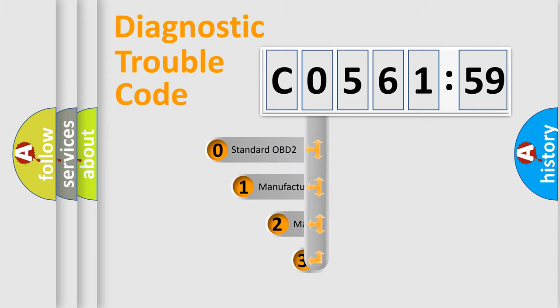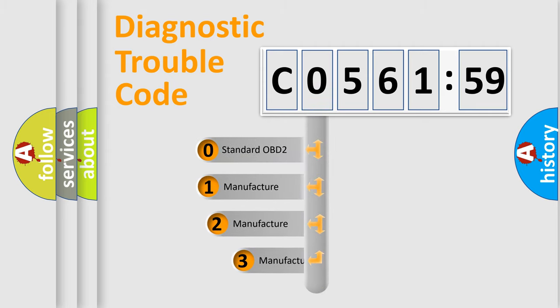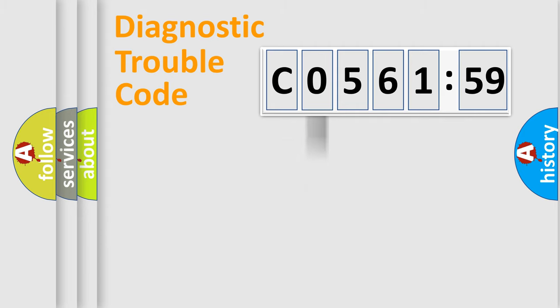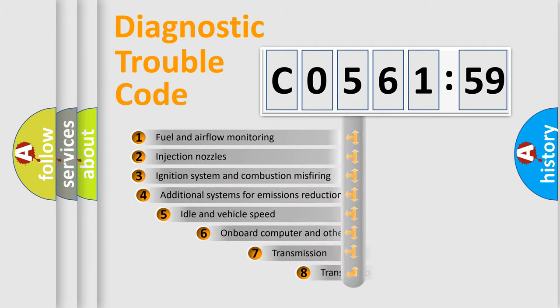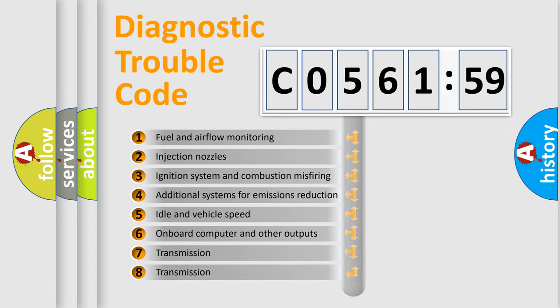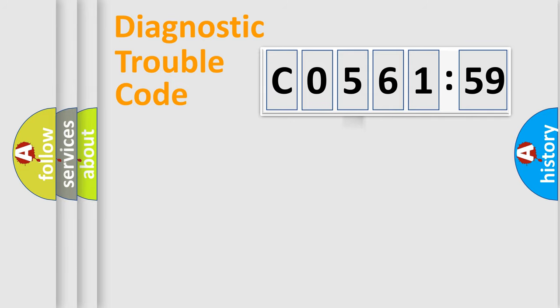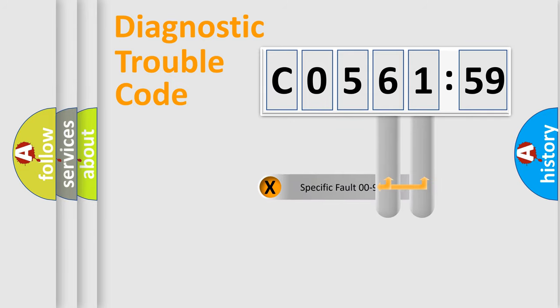This distribution is defined in the first character of the code. If the second character is expressed as zero, it is a standardized error. In the case of numbers 1, 2, or 3, it is a more specific expression of a car-specific error. The third character specifies a subset of errors. The distribution shown is valid only for the standardized DTC code.